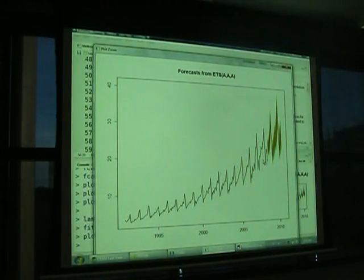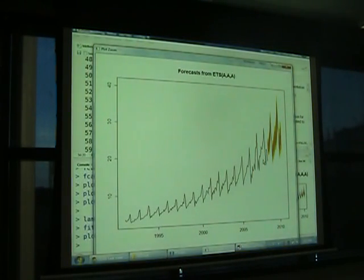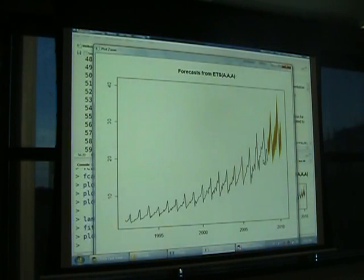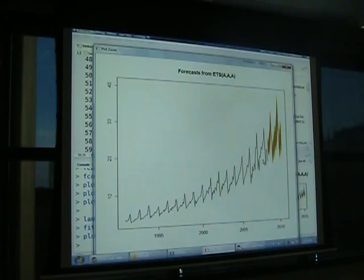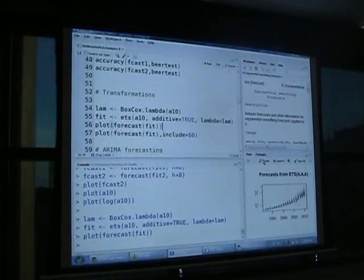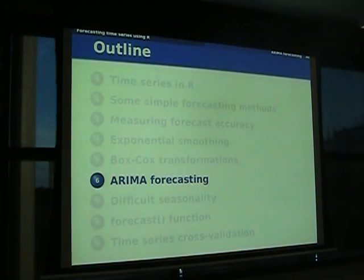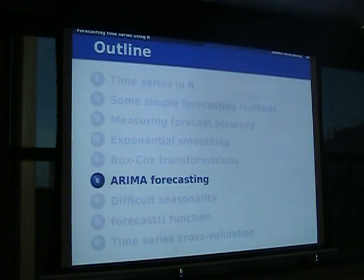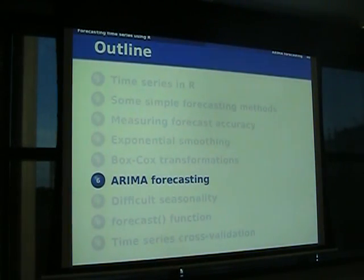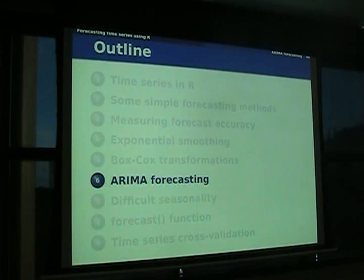So the package has found a transformation, fitted the additive model, undone the transformation, and given the results — it does a nice job. Box-Cox transformations are really useful. If you've got data that's not well-behaved, you can do one of these transformations — you can also use it in regression to get rid of some nasty effects.